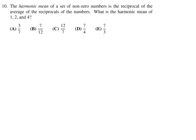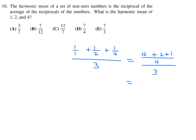The harmonic mean of a set of non-zero numbers is the reciprocal of the average of the reciprocals of the numbers. What is the harmonic mean of 1, 2, and 4? First, take the average of the reciprocals: 1 over 1 plus 1 over 2 plus 1 over 4, divided by 3. Getting a common denominator: (4 + 2 + 1) over 4, divided by 3, gives 7 over 12. Taking the reciprocal gives 12 over 7. Number 10, the answer is C.